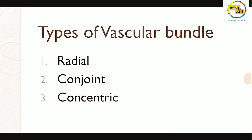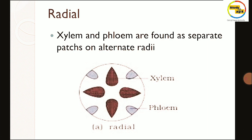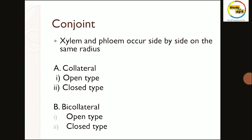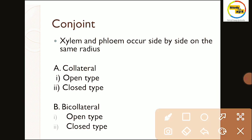In radial vascular bundles, xylem and phloem are found as separate patches on alternate radii. In conjoint bundles, xylem and phloem occur side by side on the same radius. Conjoint bundles can be collateral or bicollateral, and further classified as open type or closed type.